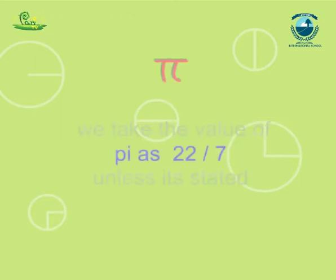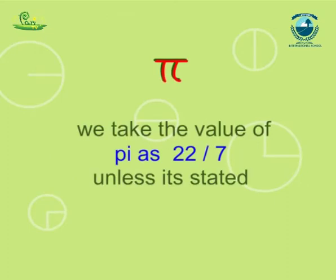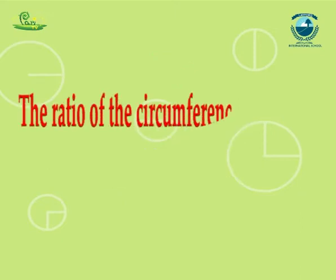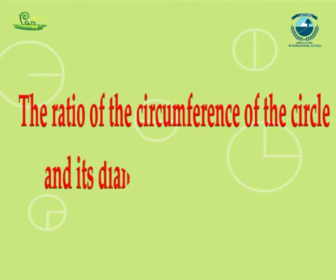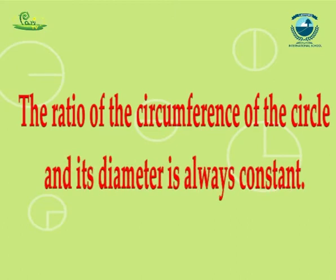Generally, we take the value of pi as 22/7 unless it's stated. The ratio of the circumference of the circle and its diameter is always constant. The result can be verified with the help of the experiment given.